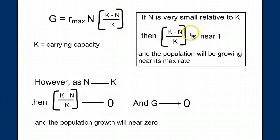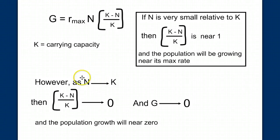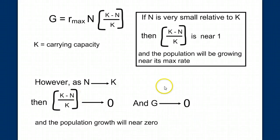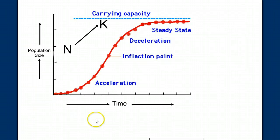If the population is very small, then this factor is near 1, and therefore the population grows near its max rate. However, as the population nears the carrying capacity, this factor would near 0, and our growth would near 0 — giving us, instead of an exponential growth curve, a logistic growth curve, or this S-shaped curve.